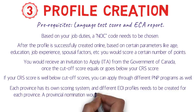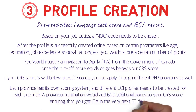A provincial nomination adds 600 additional points to your CRS score, virtually guaranteeing an ITA in the very next Express Entry draw. These draws are generally conducted every 15 days, so once you receive a provincial nomination, you can update your Express Entry profile and expect to receive the ITA in the next draw.